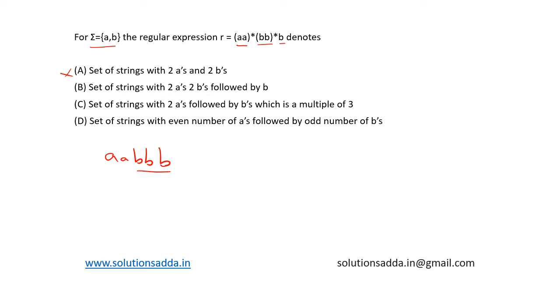Let's see option b. Set of strings with two a's followed by two b's and one single b. Here, this option is also not correct. We can generate a string a, a, a, a, b, b, and b. This is a set of string with four a's, two b's followed by b. This is also not correct.